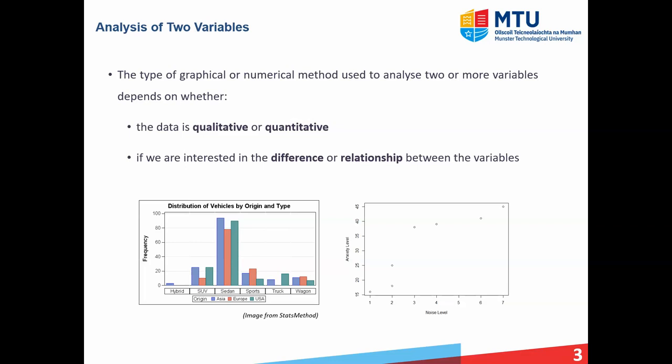To illustrate this, consider the two graphs shown below. On the left-hand side, we have a clustered bar chart, and this is used to represent qualitative data, namely car type. We can also see the differences between the number of cars in various areas, indicated by the height or frequency. On the right-hand side, we have a scatter plot, which can be used to represent quantitative data — in this case anxiety level and noise level — and we are interested in looking at the relationship between these two variables.